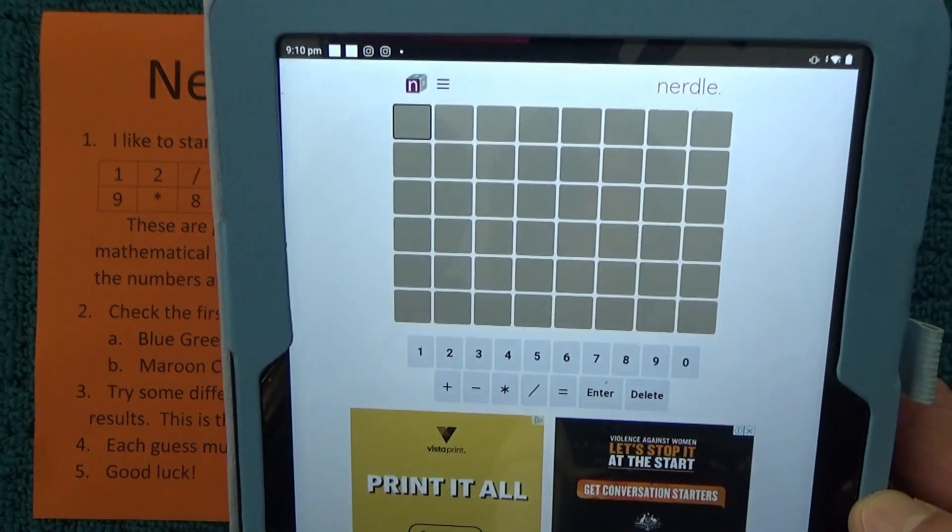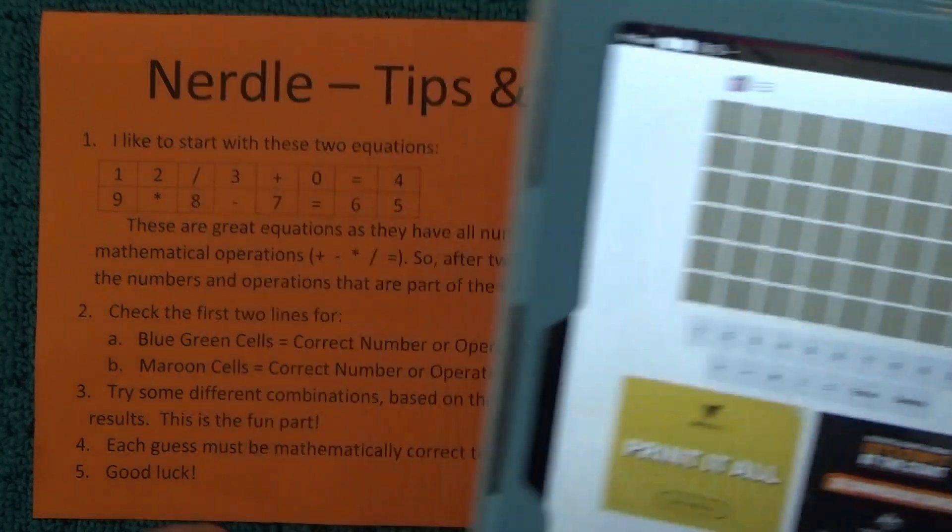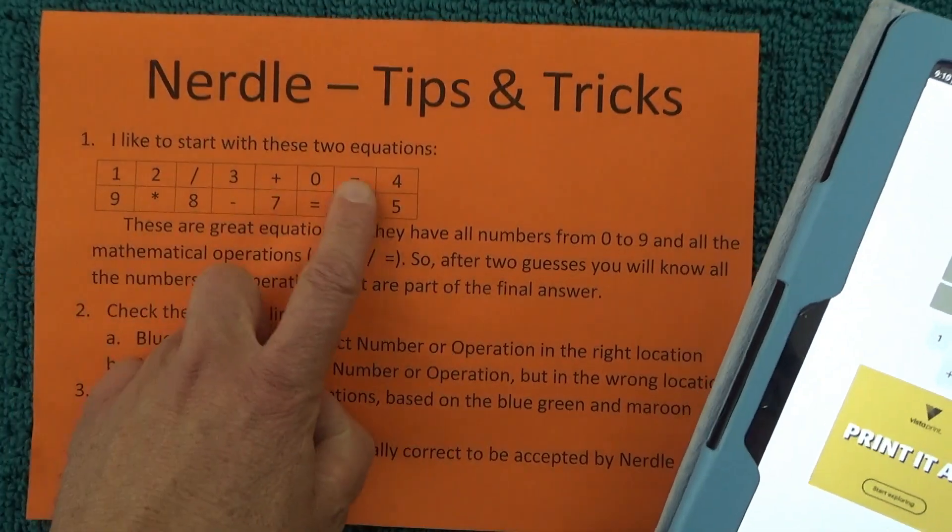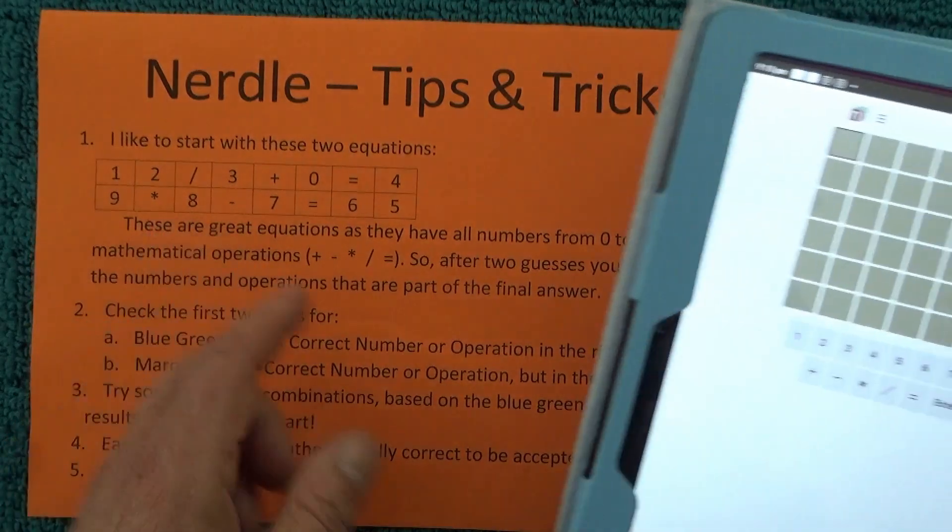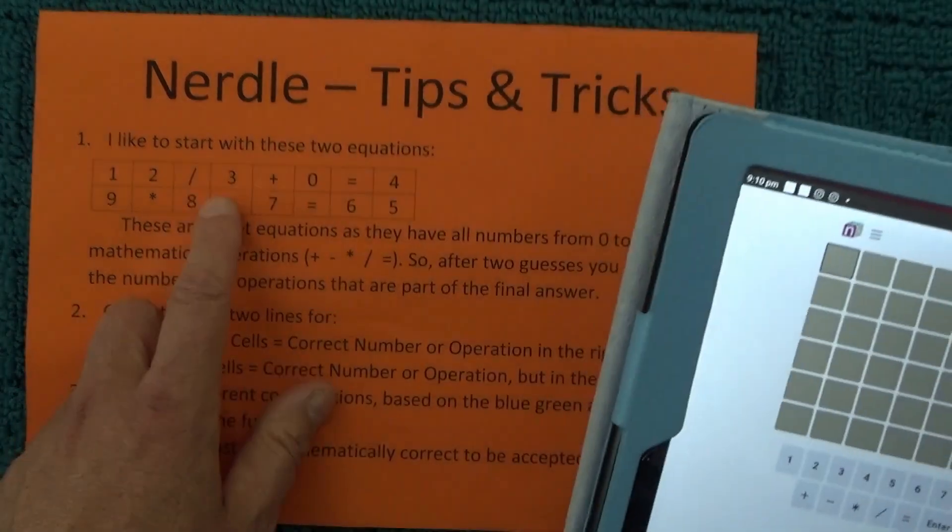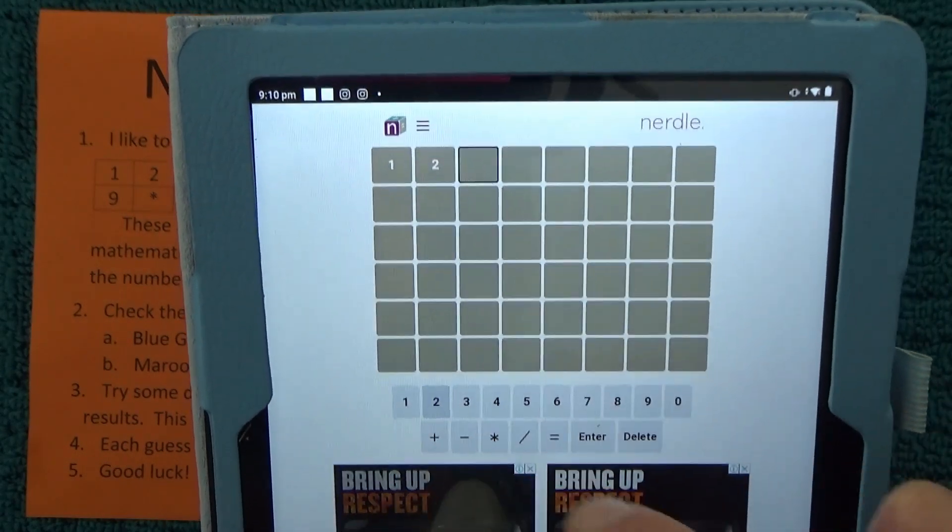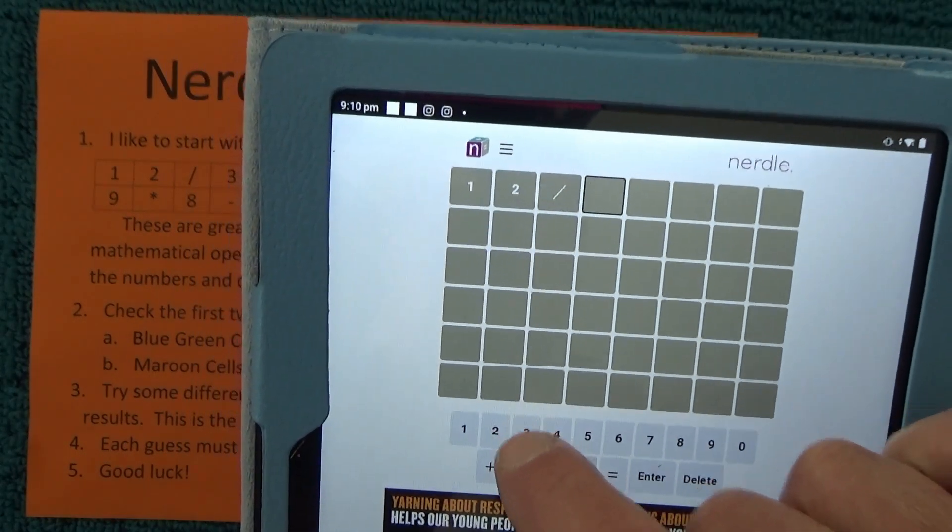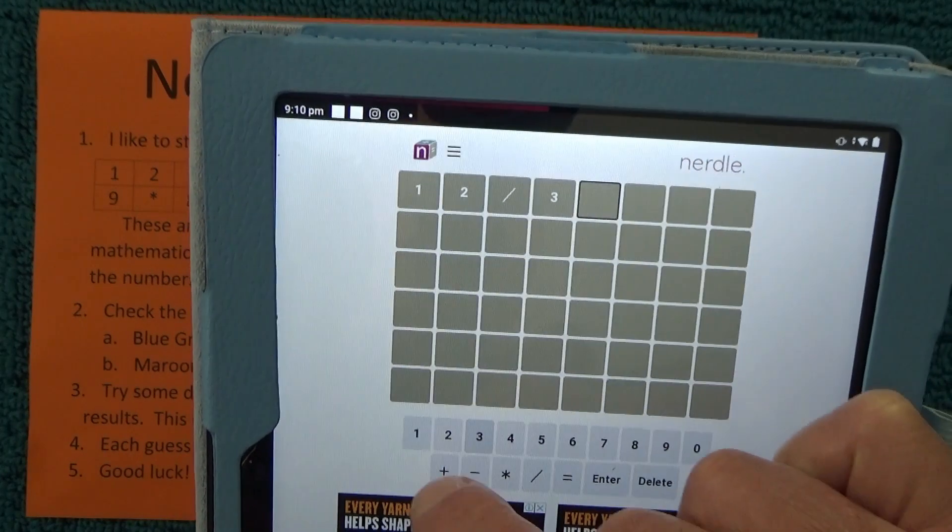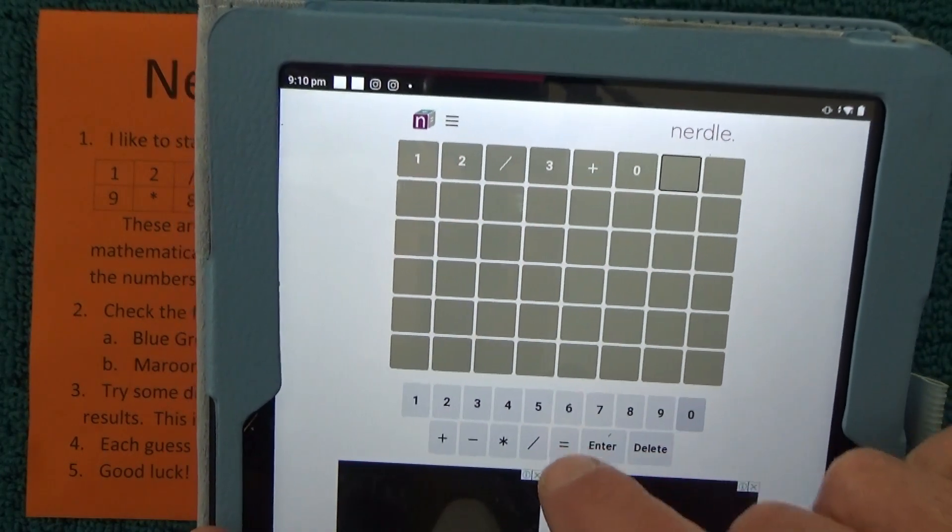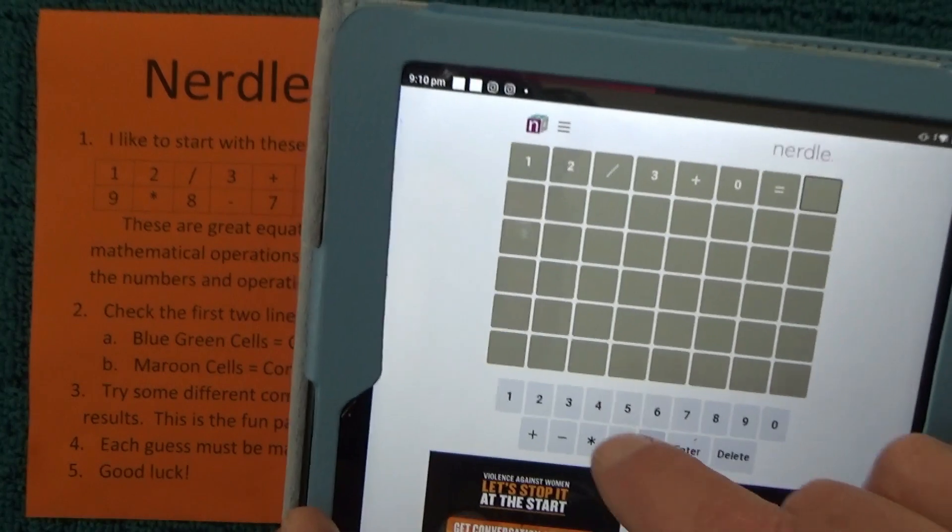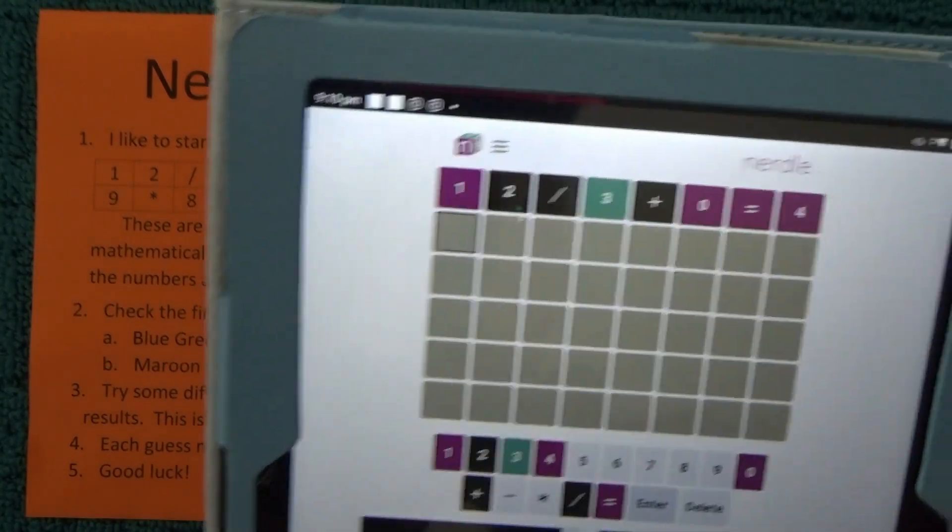And so with Nerdle, I like to start off with these two mathematical equations. So first of all, I'll put the first equation in first, 12 divided by 3 plus 0 equals 4, and enter.